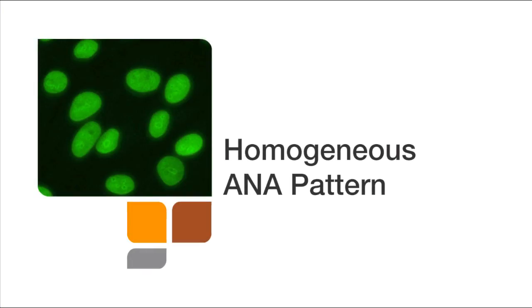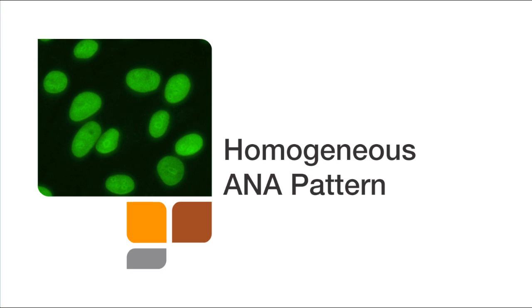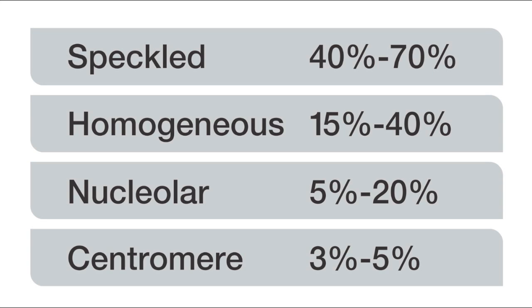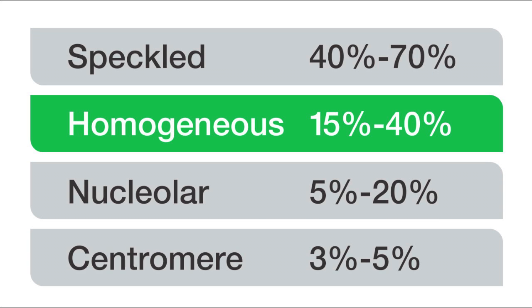Today in this video, we will be analyzing the step-by-step process in interpreting a common ANA-IFA pattern and its clinical significance. The IFA pattern for today is a homogeneous pattern. The homogeneous pattern is a common ANA-IFA pattern and is seen in about 15-40% of IFA-positive samples.